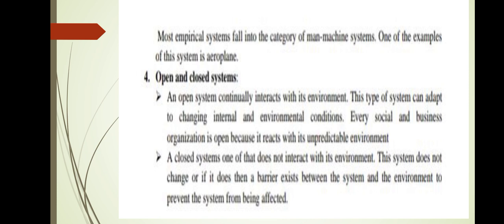Open and closed systems: an open system continually interacts with its environment. All the components in an open system are affected or motivated by the environment. This type of system can adapt to change in internal and environmental conditions, so we can call an open system an adaptive system. An example is a social business organization, because it reacts with its unpredictable environment. A closed system is one that does not interact with its environment — it is completely closed within its particular components and does not change. If a barrier exists between the system and the environment, it prevents the system from being affected. Thank you.